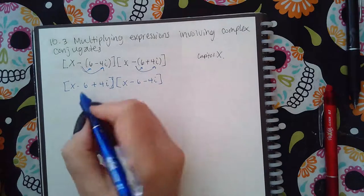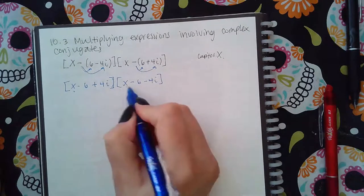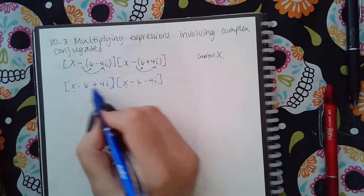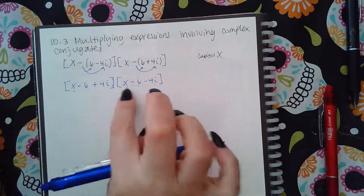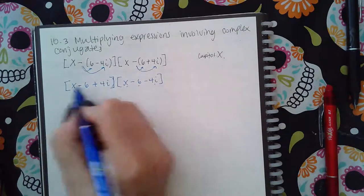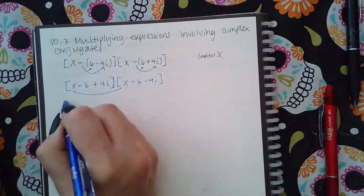So you're gonna take X times each one of these guys, negative six times each one of these guys, and then positive 4i times each one of these guys.